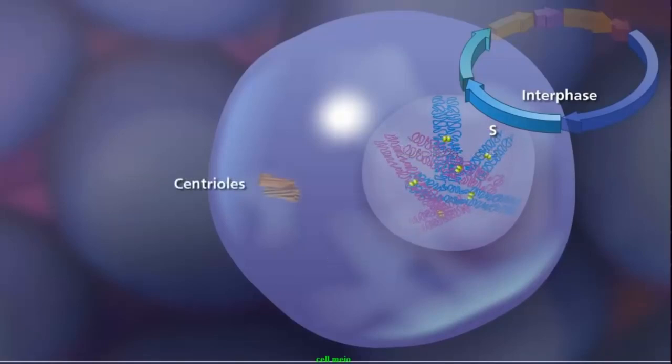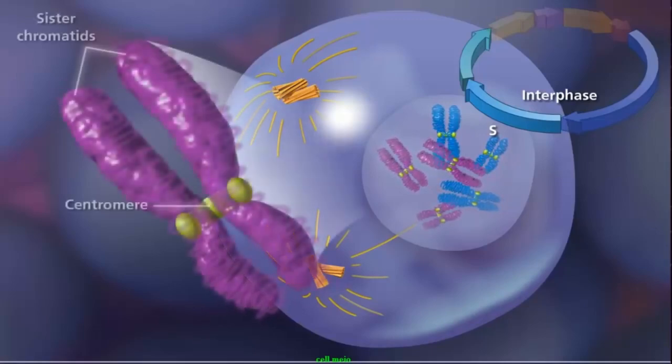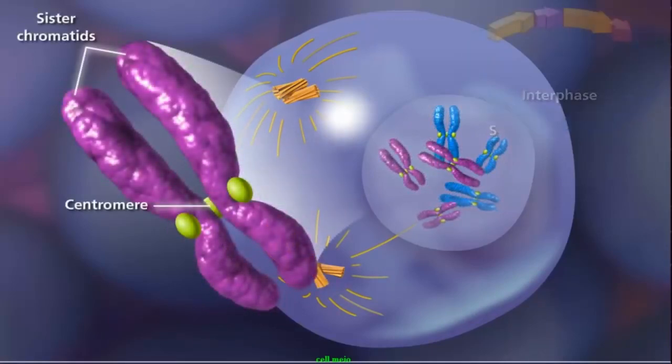The paired centrioles in the cytoplasm duplicate and begin extending microtubules that will form the meiotic spindle. Sister chromatids remain attached at the centromere and condense as the cell enters prophase I of meiosis.